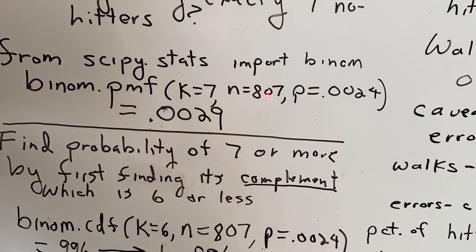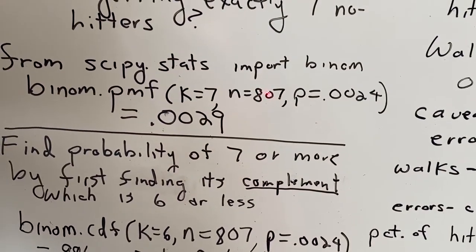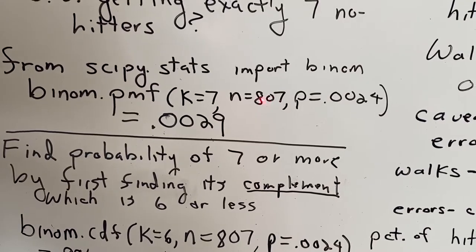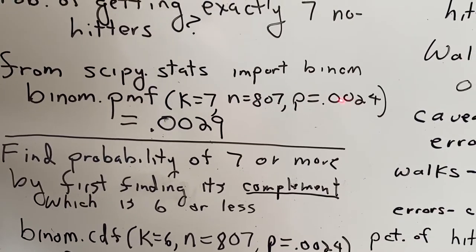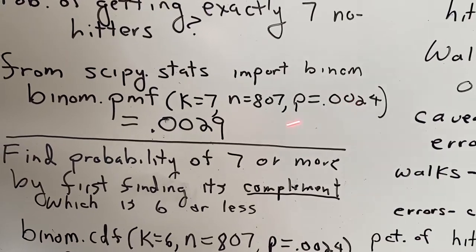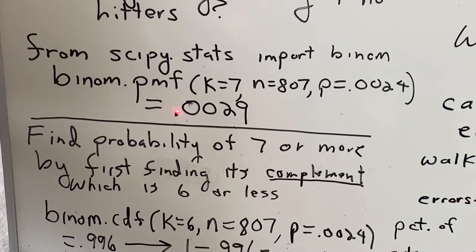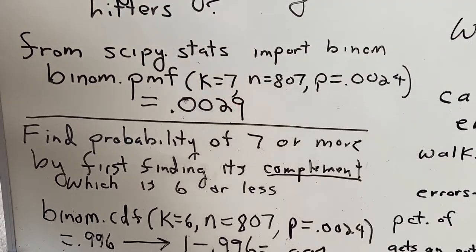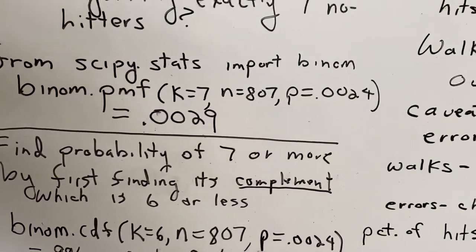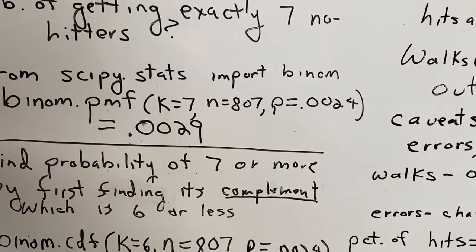N equals 807. That's the total number of attempts. In this case, games started. Probability of a success, in this case a no-hitter, is 0.024. So the probability of getting exactly 7 no-hitters is 0.0029. I'm going to get a quick sip of coffee here.